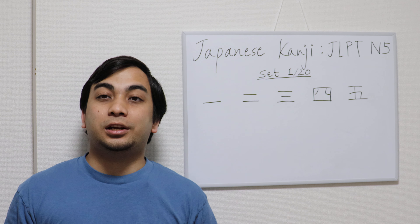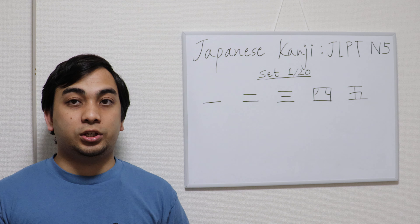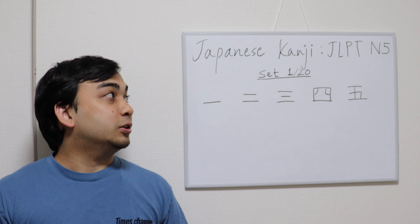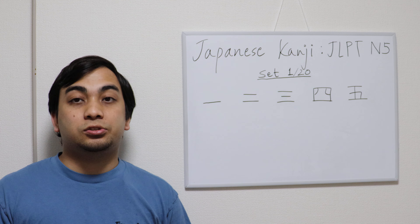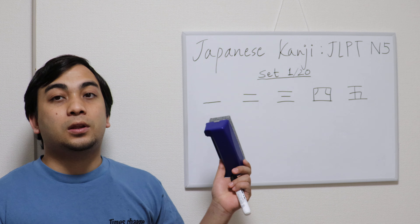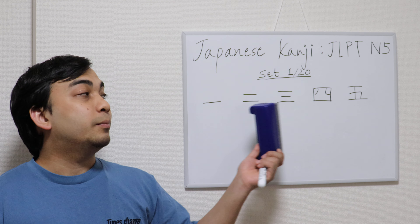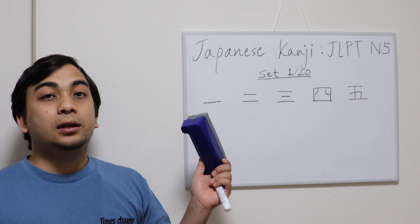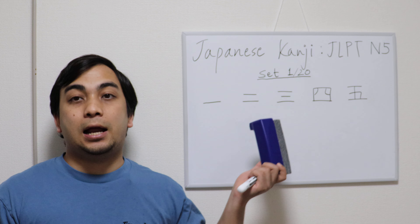Hi there, Arsene here. Today I'm going to teach you JLPT N5 Kanji set 1. This kanji collection, JLPT N5, consists of 100 kanjis. We divide those 100 kanjis into groups of 5, making 20 sets. So today we're going to learn the first set, set 1 out of 20.